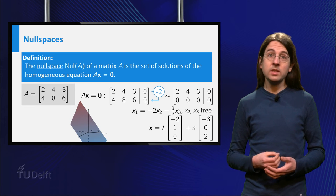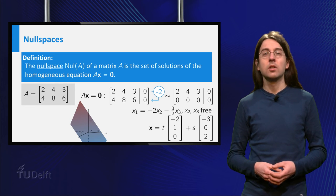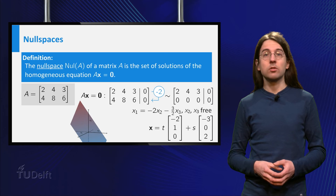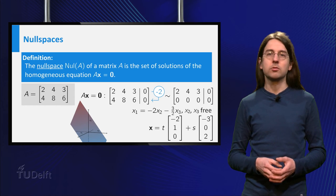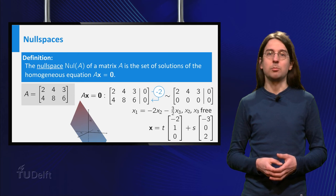Note that we see this by rewriting the null space as all linear combinations of the two vectors minus 2, 1, 0 and minus 3, 0, 2. This gives another example.